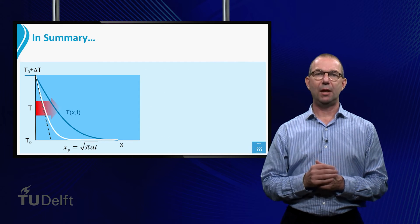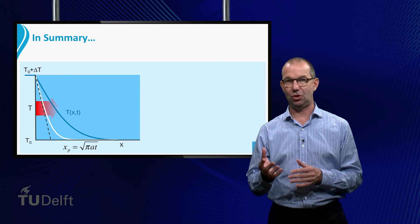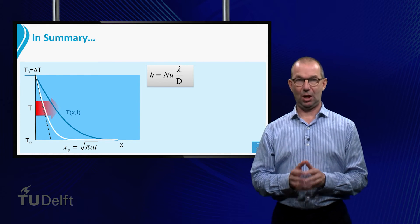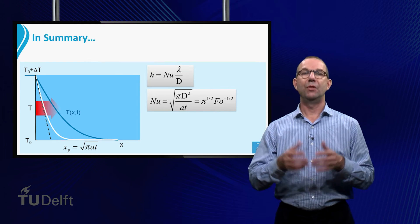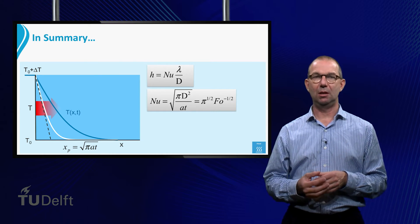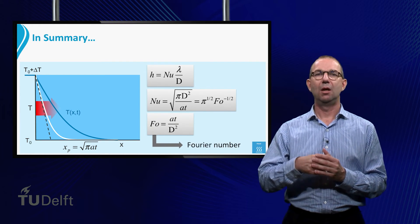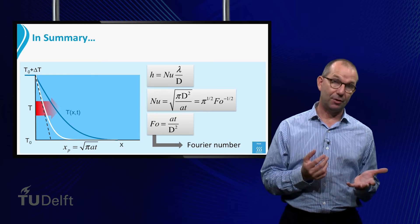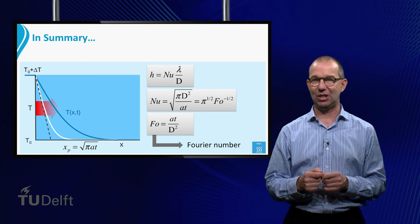We can of course write the flux to driving force relation also in terms of a heat transfer coefficient h, or preferably a Nusselt number. From the theory discussed here, Nusselt is a function of time. Or written in its dimensionless form, Nusselt equals the square root of pi times the plate's thickness d squared over at. We can write the right hand side using the Fourier number FO. This number is defined as at over d squared. It gives the dimensionless time. We will come back to this number extensively in the next lecture.